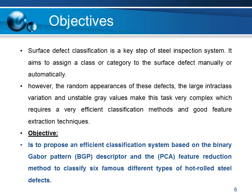Therefore, the main objective of this work is to propose an efficient classification system based on the Binary Gabor Pattern descriptor and the PCA feature reduction method to classify six different types of hot rolled steel defects: crazing, patches, pitted surface, inclusion, rolled-in scale, and scratches.